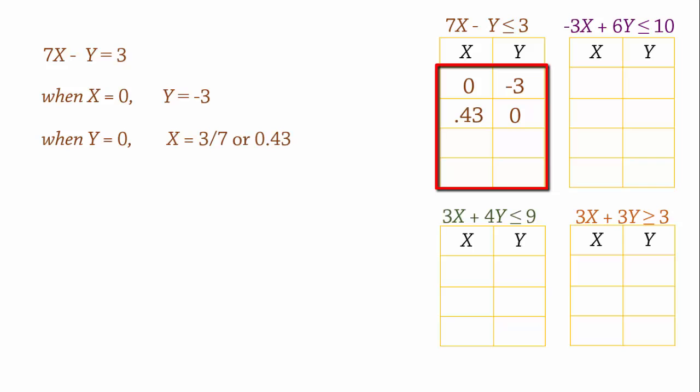These two points are not that useful to us because the first has a negative which will take us far away from the feasible region and make the graph very small. The other has a fraction of value that cannot be easily located on the graph. So let's try finding more points. To make it easy to find useful points, it is better to rewrite the equation in terms of one variable. In this case, we write it in terms of y. That is, y equals 7x minus 3.